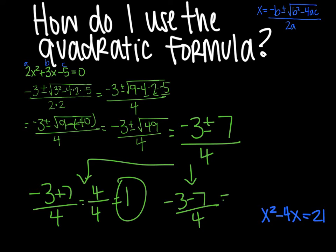And then this way negative 3 plus negative 7 gives me negative 10 over 4, which I can simplify by dividing by 2. I get negative 5 halves. So my answer is 1 and negative 5 halves.